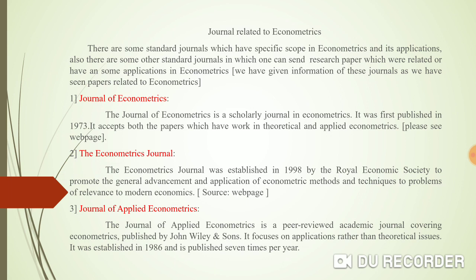Then we have the Journal of Applied Econometrics, a peer-reviewed academic journal published by John Wiley. It mainly focuses on applications rather than theoretical issues, and was established in 1986, published seven times per year. Those interested in applied econometrics, applied economics, or the application of mathematics in economics should refer to this journal.